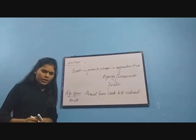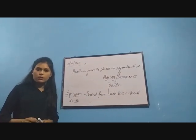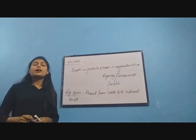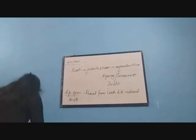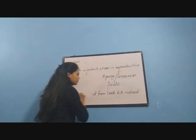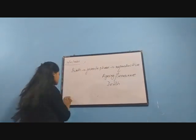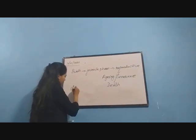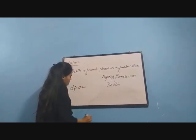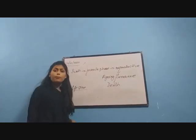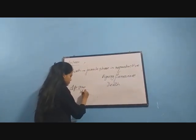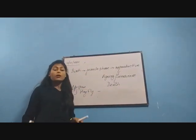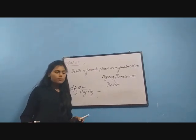The life span of different organisms varies quite a lot. Let us take some examples. Students will be quite surprised to know that the life span of a mayfly is only one day — just imagine, the mayfly lives only one day.